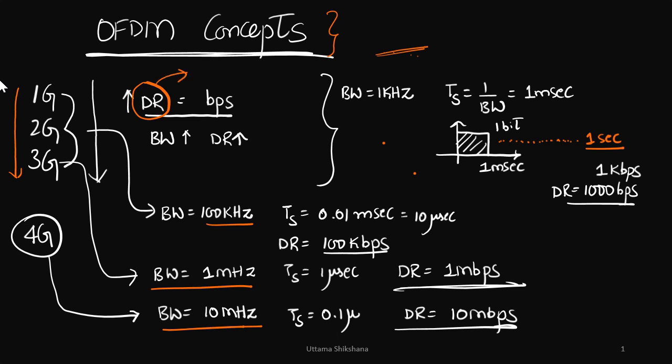But what is data rate? Data rate is nothing but bits transmitted per second. It is well known that if we increase the bandwidth, we can increase the data rate. So from generation to generations, the bandwidth was increased.